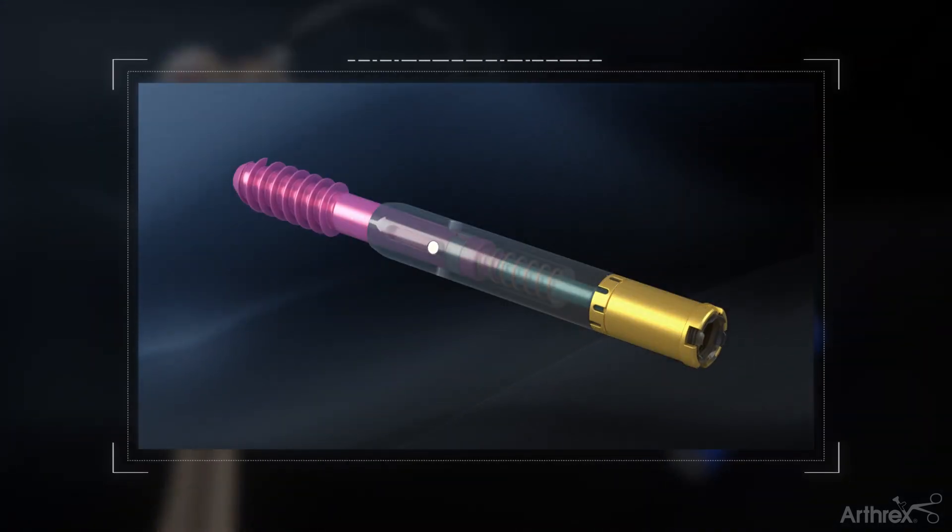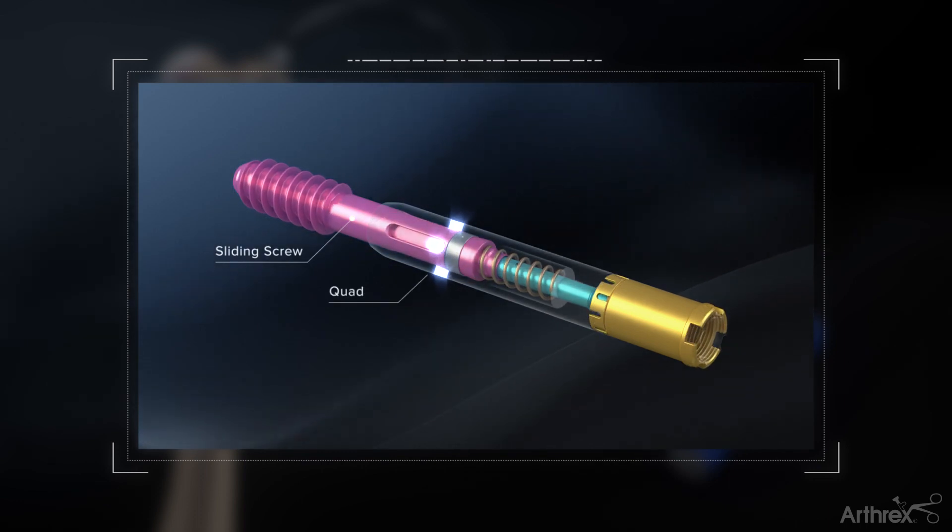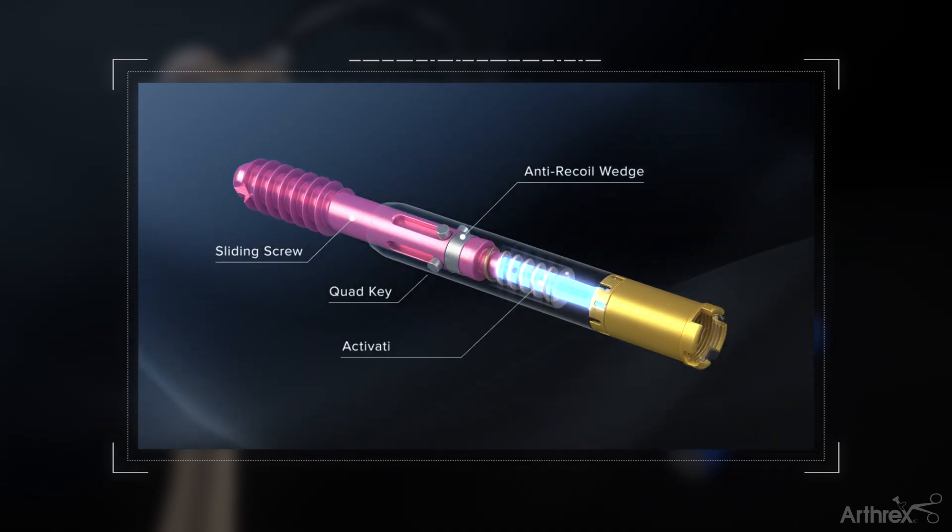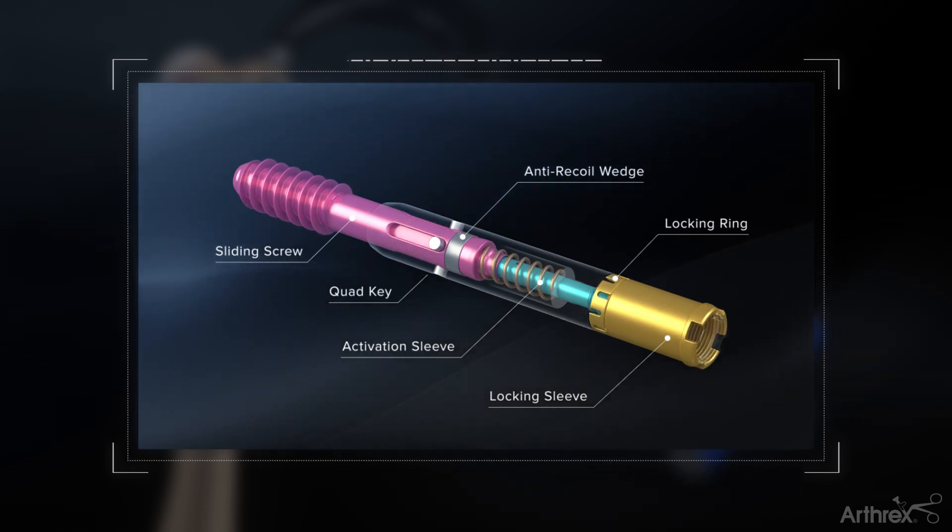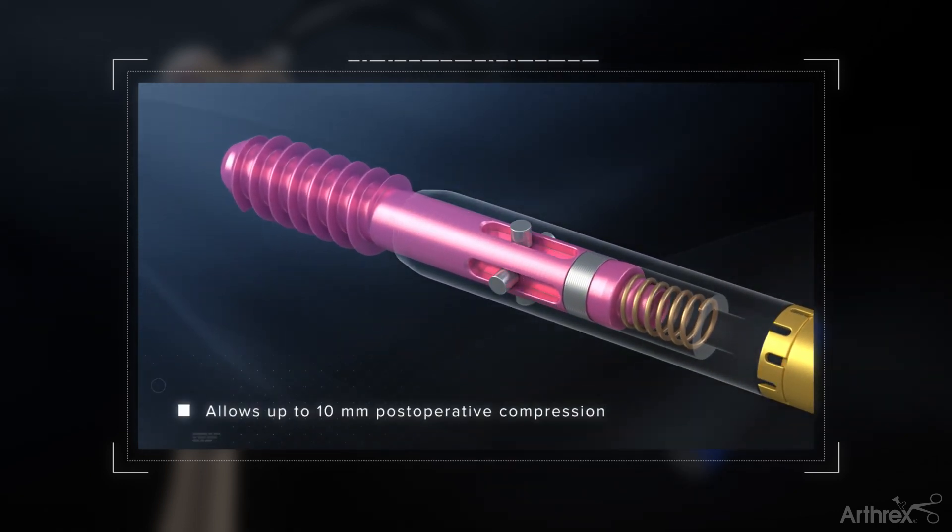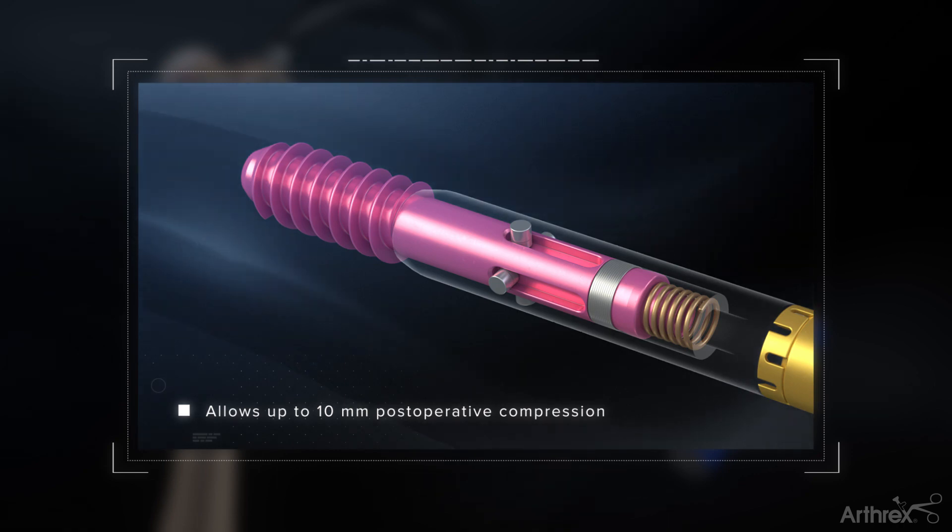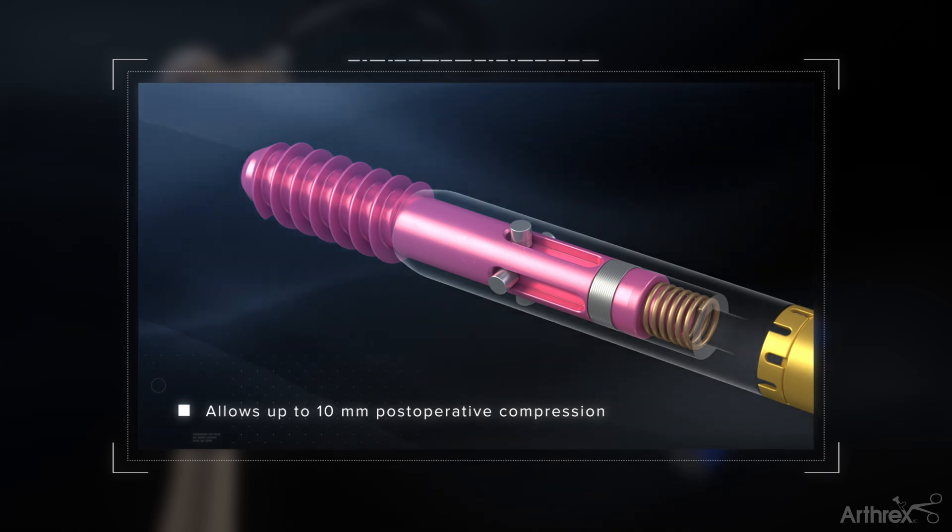The 10.5 mm telescoping lag screw features many innovative internal features and mechanisms and is locked into the nail via expansion of the circumferential locking ring. The design allows up to 10 mm of post-operative compression within the lag screw to prevent lateral thigh pain.